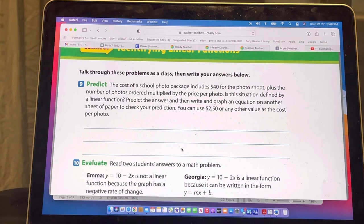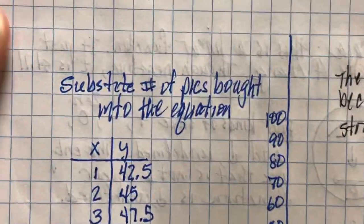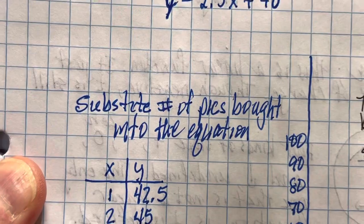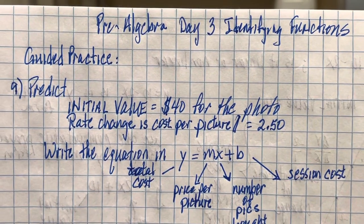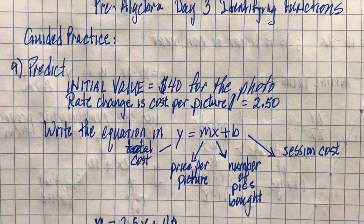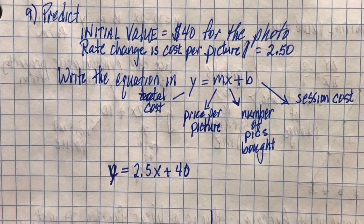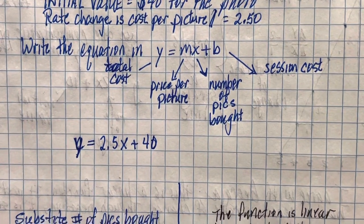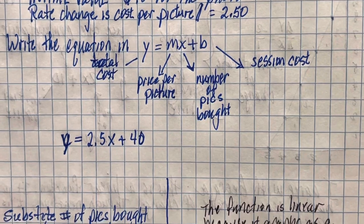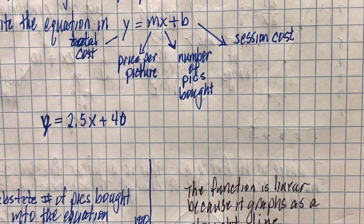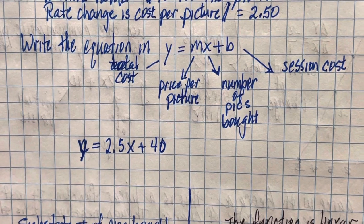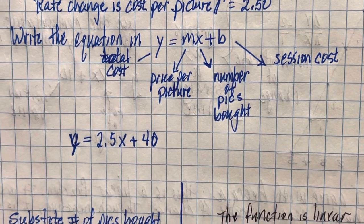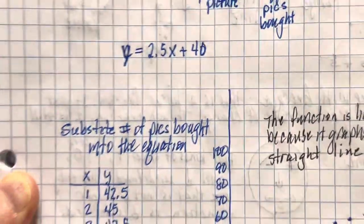Then write an equation and graph it. Our initial value is forty dollars for the photo shoot, and the rate of change is the cost per picture, which we're going to use as $2.50. The equation should be written in y = mx + b form, where y is the total cost, m is the price per picture, x is the number of pictures bought, and b is the session cost. So our equation is y = 2.5x + 40.